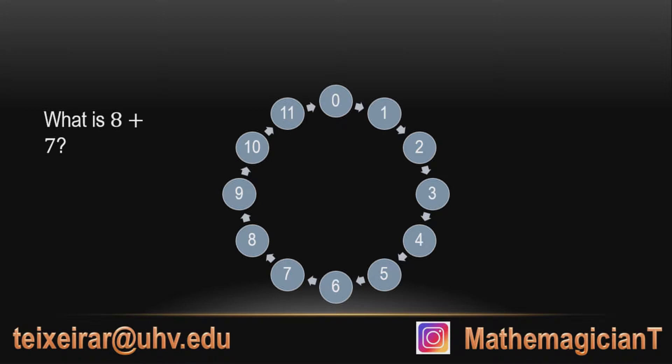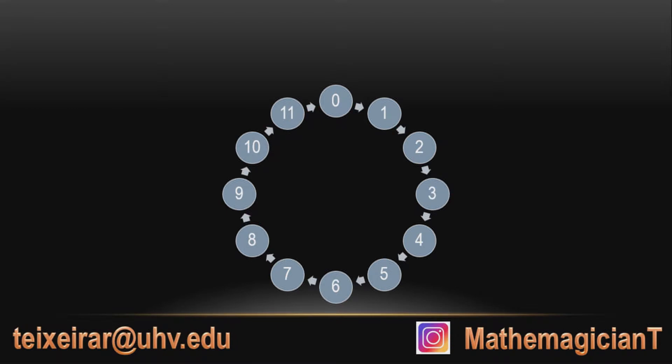For example, what's 8 plus 7? Well, you start at 8 and it goes 7 steps. So you go 1, 2, 3, and if you go all the way to 7 steps, it's going to be back to number 3. So we say that 8 plus 7 equals 3 modulus 12.